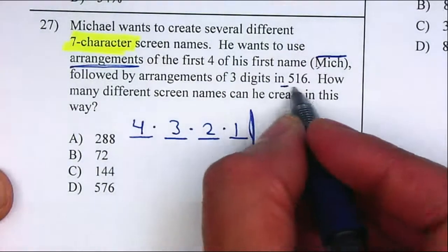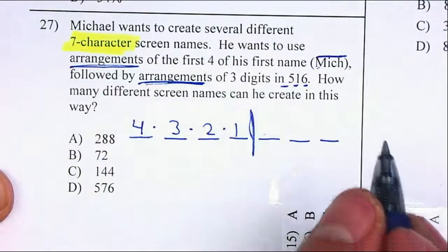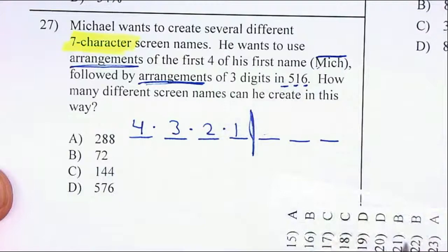Now, for the next three digits, he only wants to use the five, the one, and the six. And I also say arrangements, so that means that they cannot be repeated. It can be either five, one, six, or one, five, six, or six, five, and one, and so on.